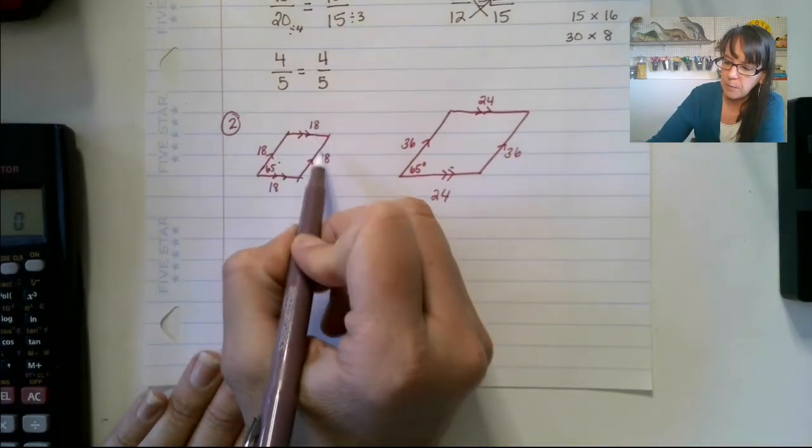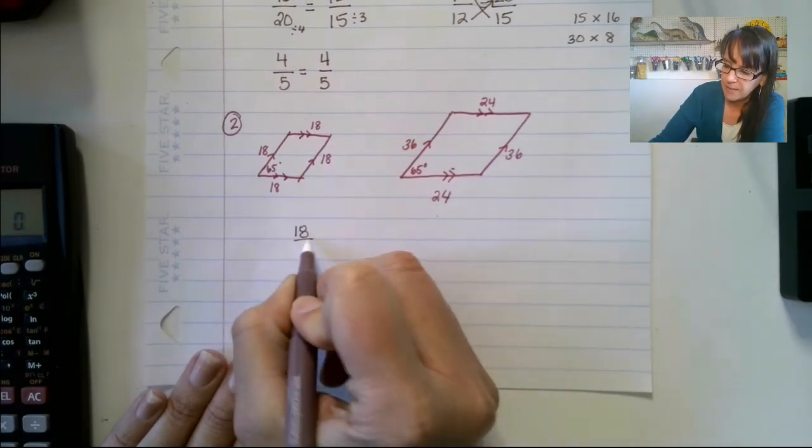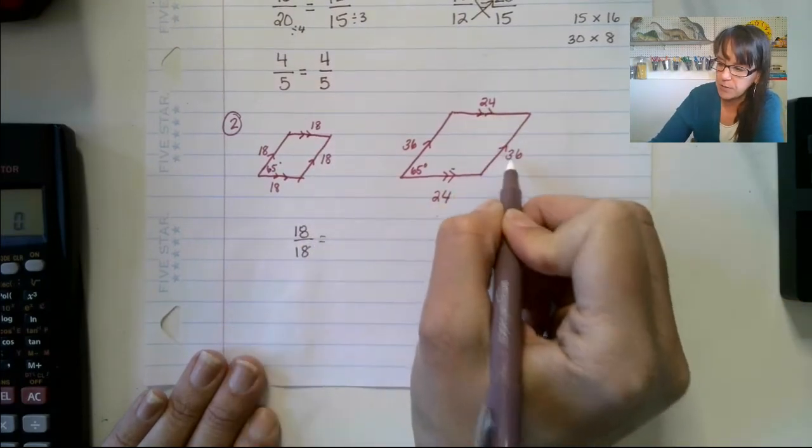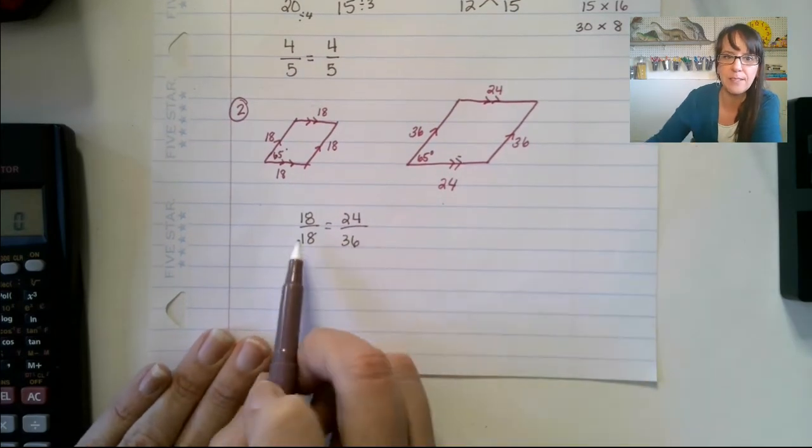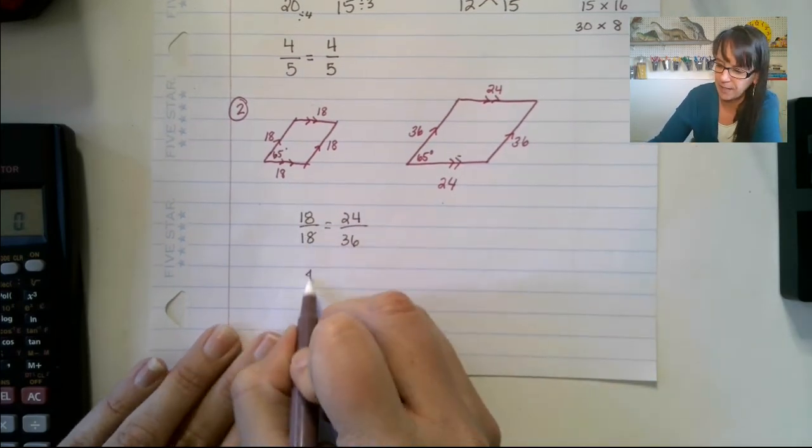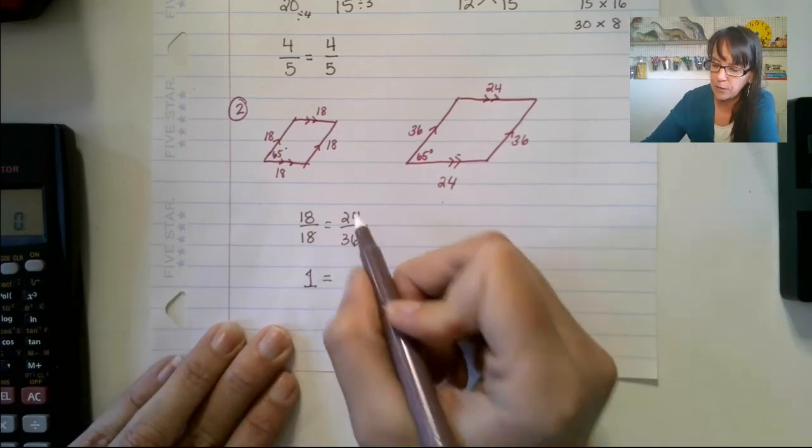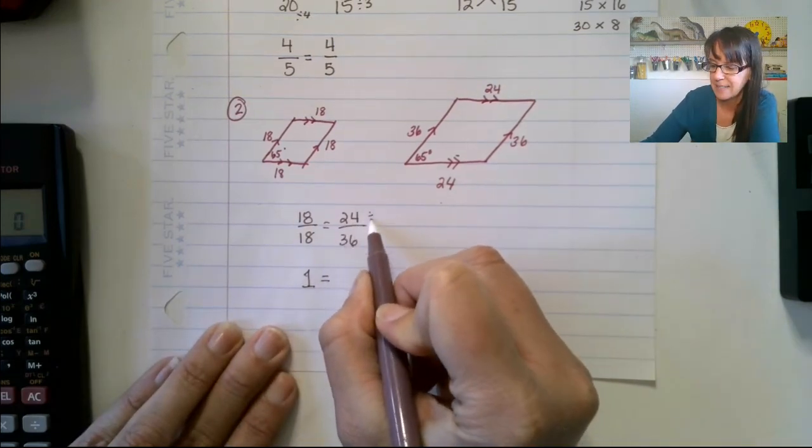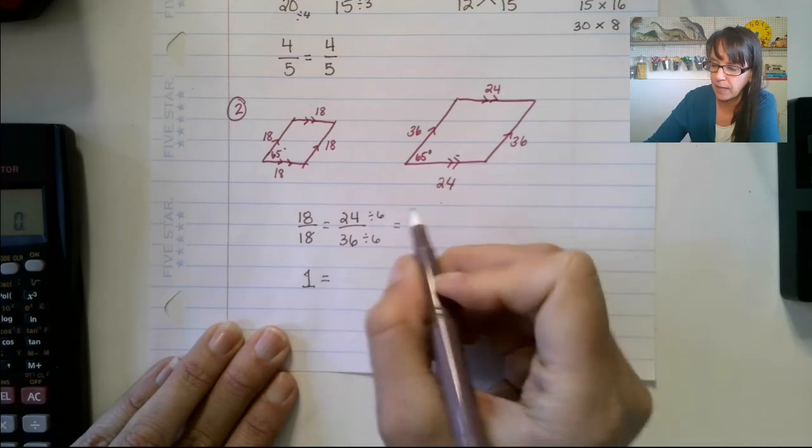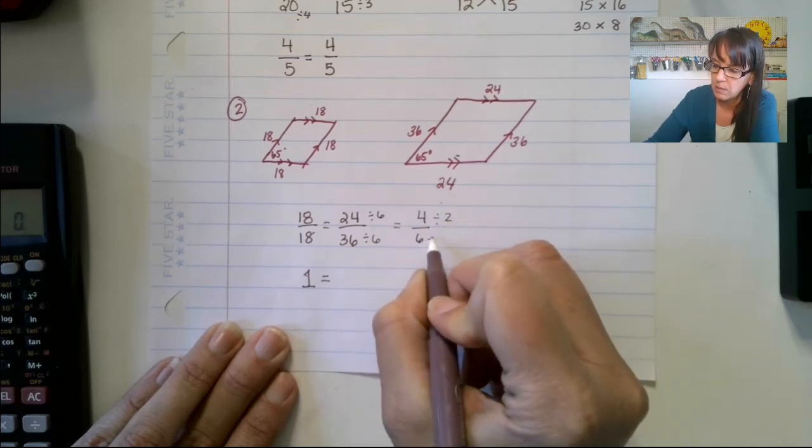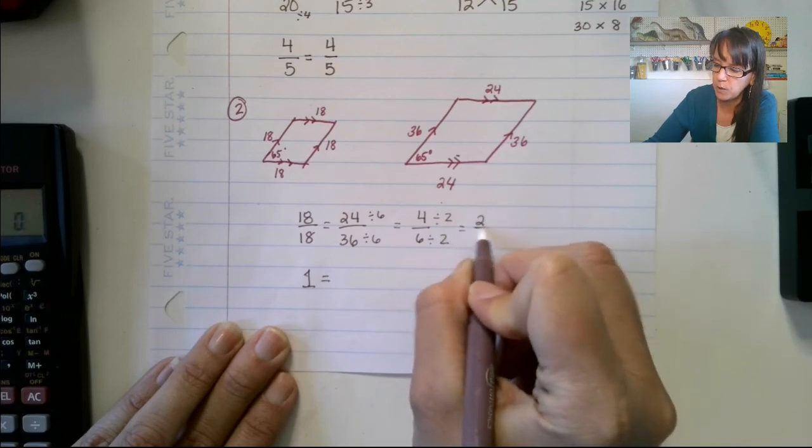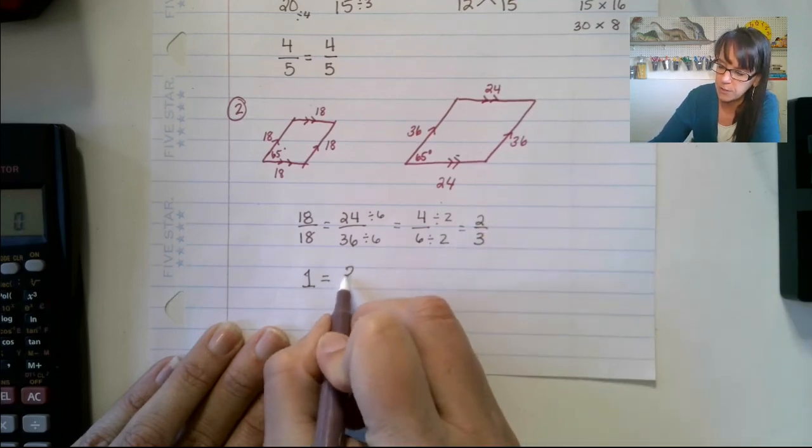So let's do top over side equals top over side. All right, well, if we do that, divide 18 and 18, that just gives us one, right? One equals. Now, over here, we can divide by six, divide by six, and we end up with four over six, and then we can divide again by two, by two, and we end up with two over three. So our reduced fraction is two over three.